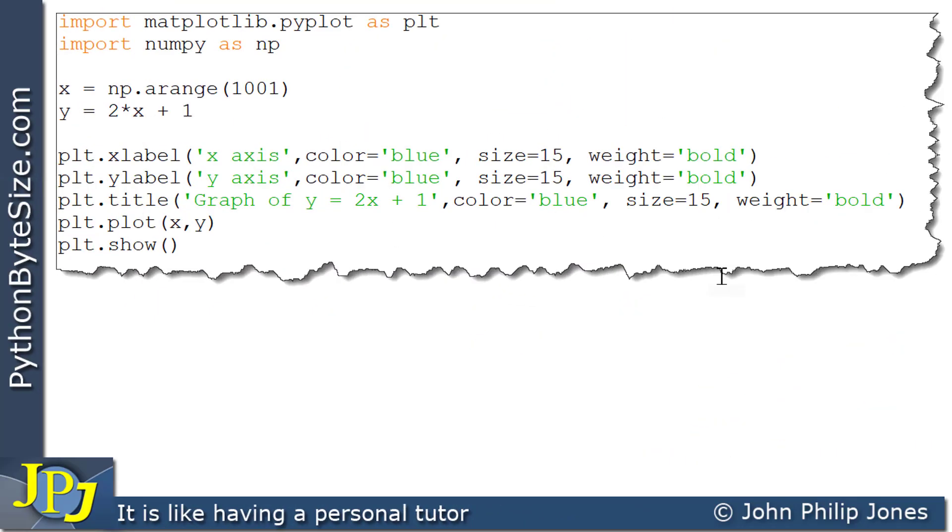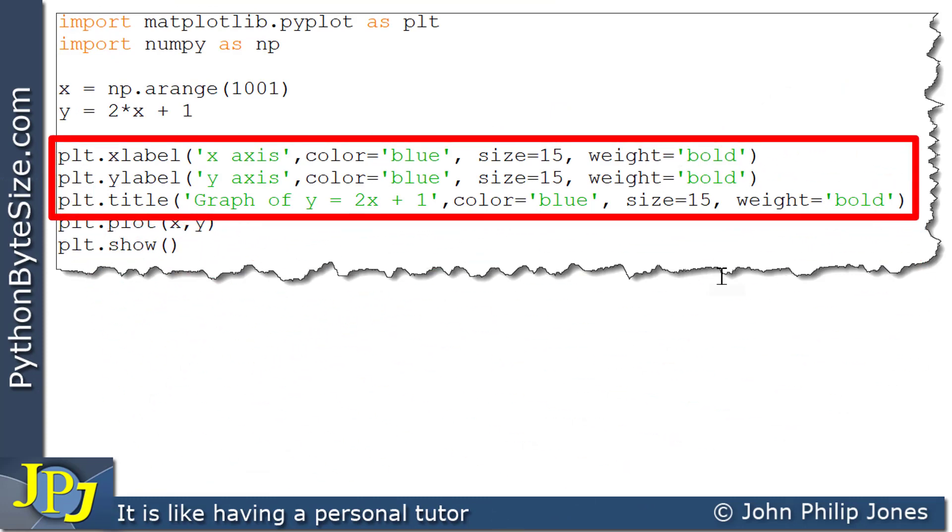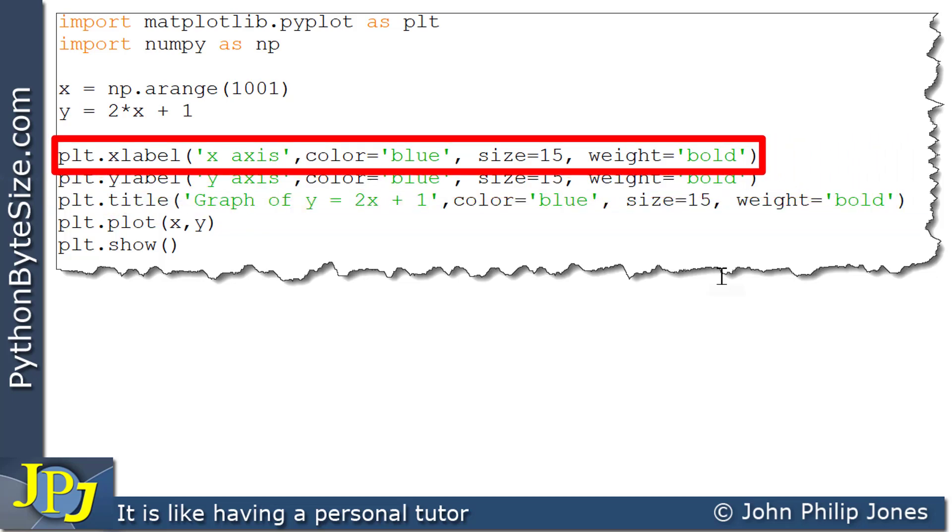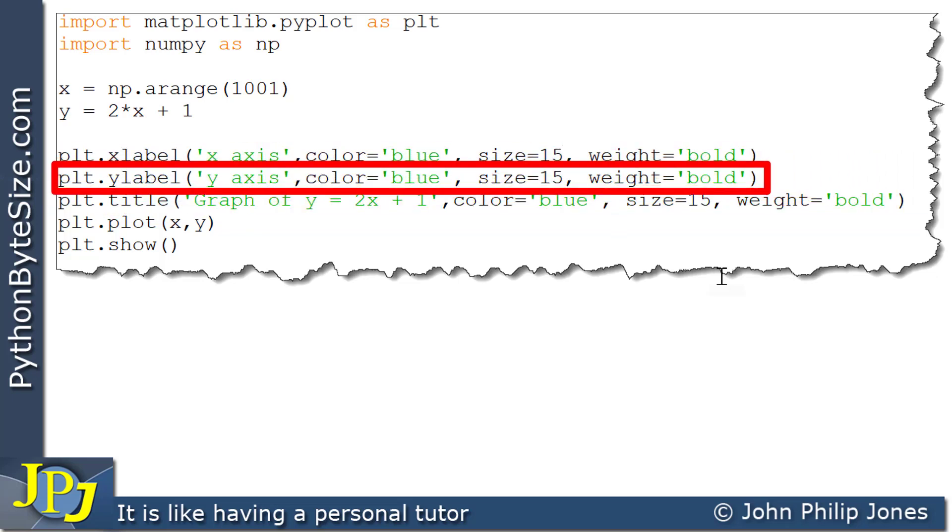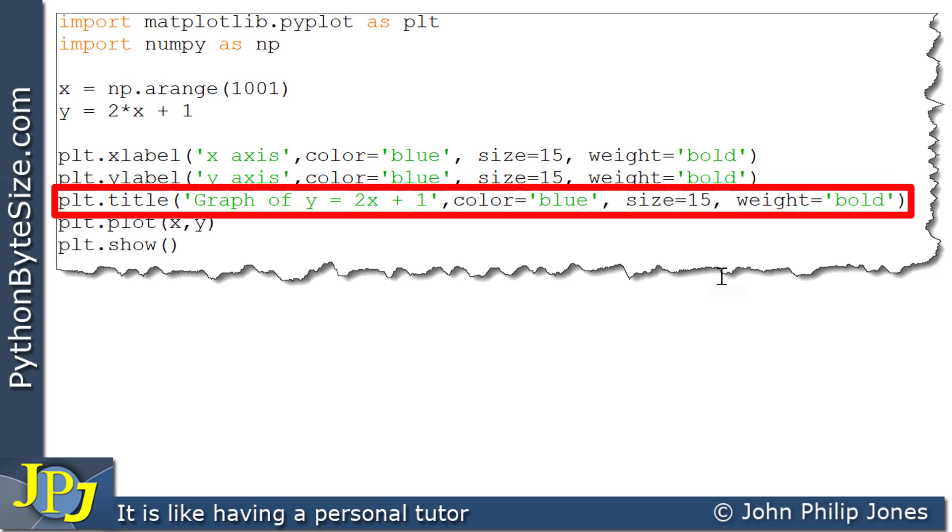This is an amendment to the program I've just discussed. And you can see that we have these three program statements here, all responsible for placing text upon the graph that's drawn. This line will label the x-axis. This will label the y-axis. And this will put a title upon the graph.